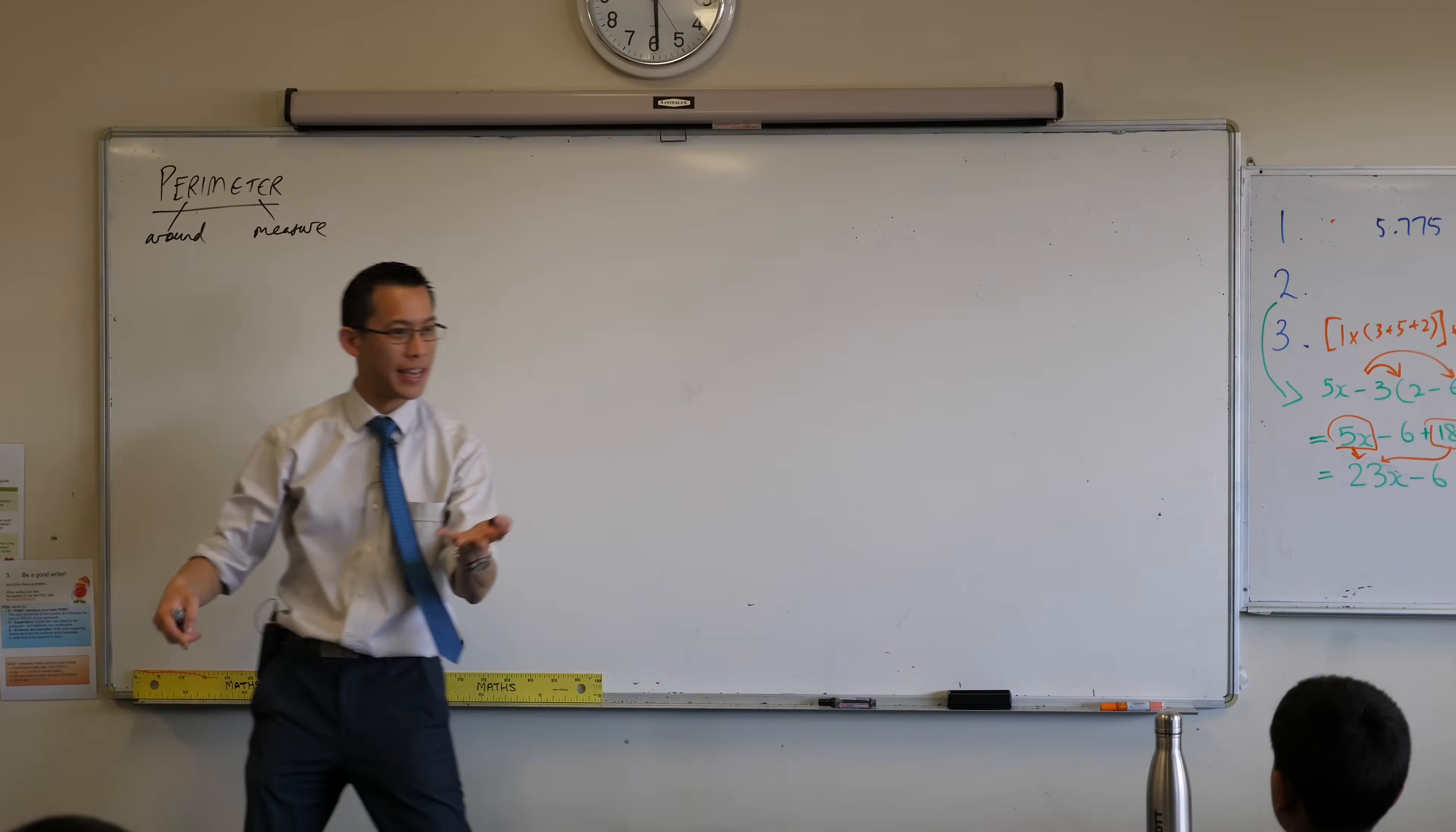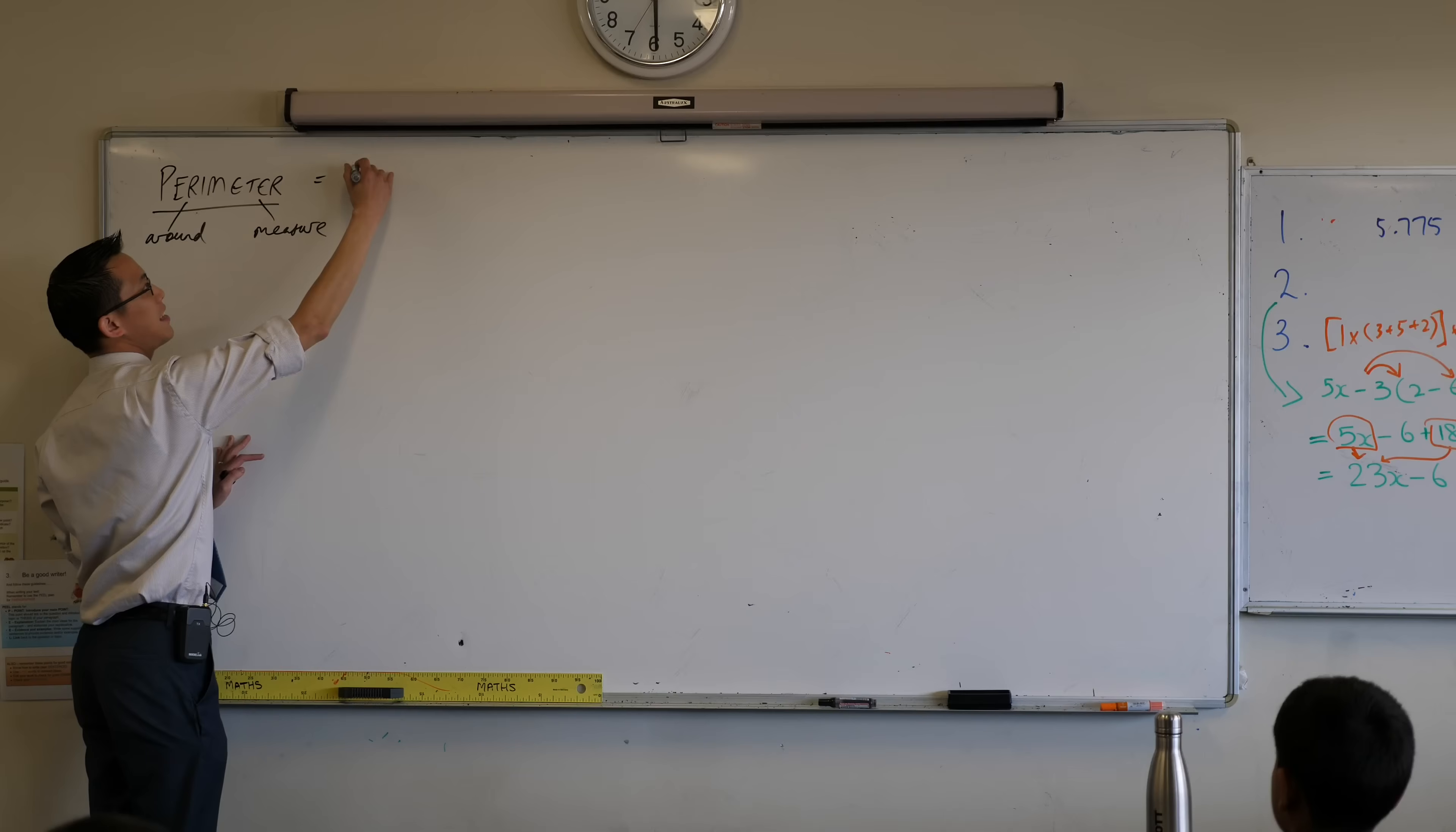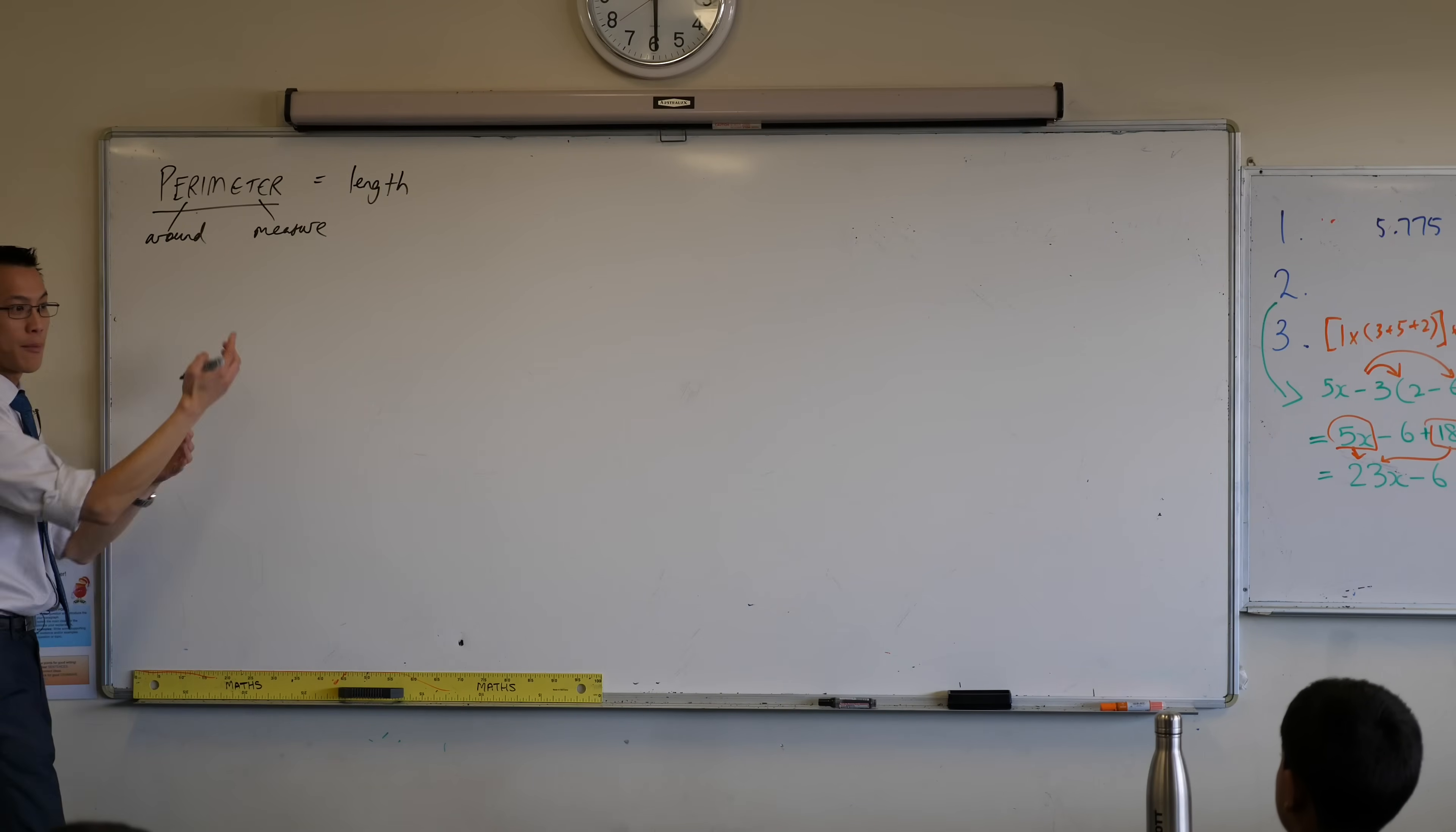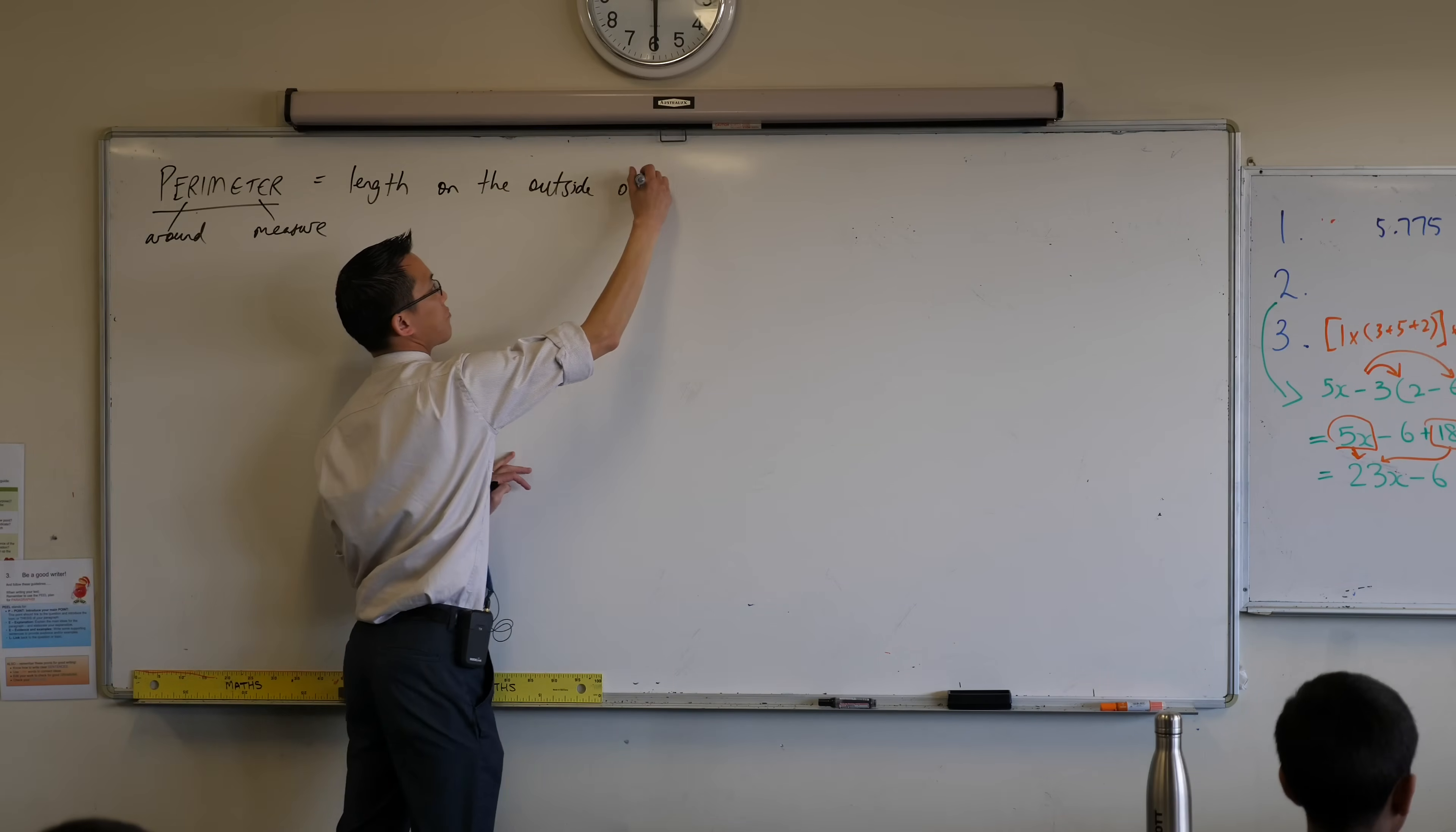So, perimeter literally means, not all words are like this. Some words are really like, like periperi, whatever. I don't know what that means. Maybe in another language. But perimeter, thankfully, means exactly what it says. It's equal to what it is, is the length that you measure around a shape or on the outside, if you like. On the outside.